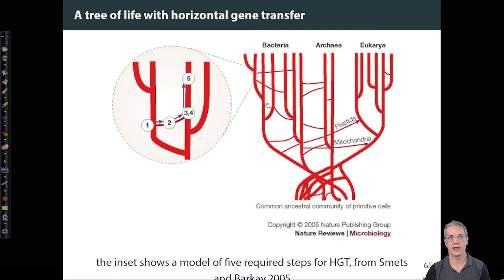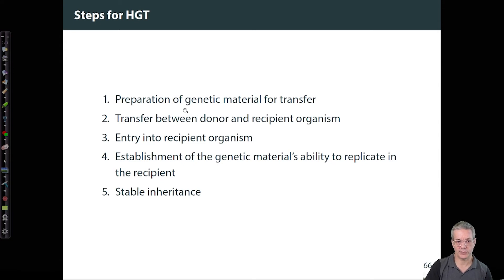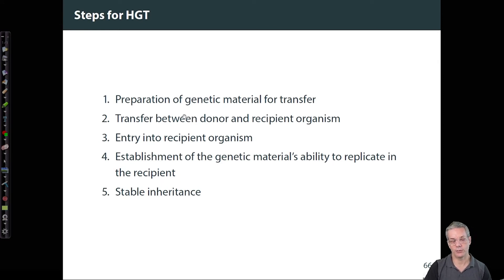And why is that? Here's step one: the preparation of the genetic material for transfer. So that might be, in the case of a membrane disruption, a leakage of genetic material out of an organism. The second is transfer between a donor and a recipient.